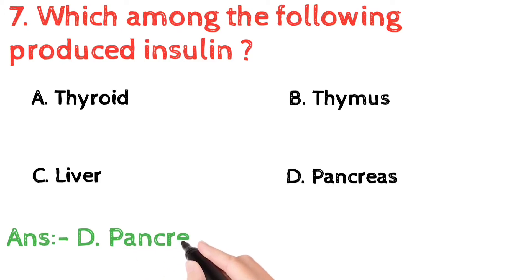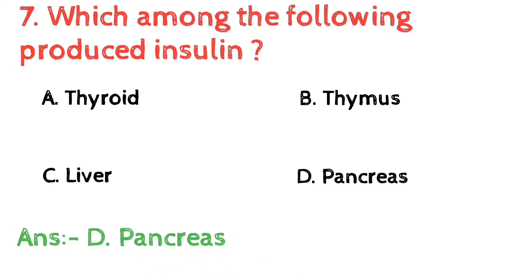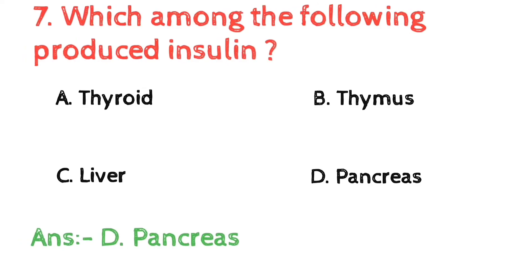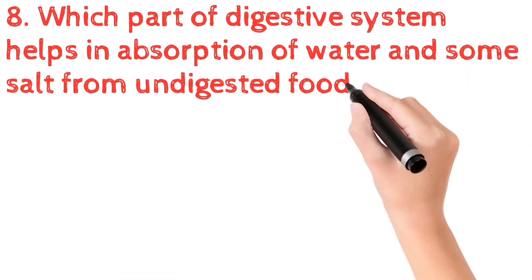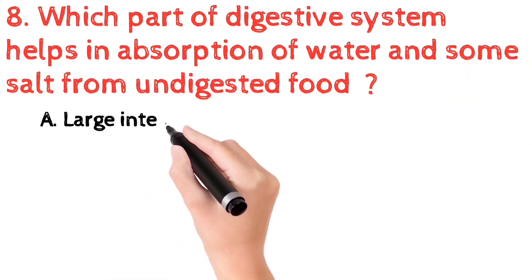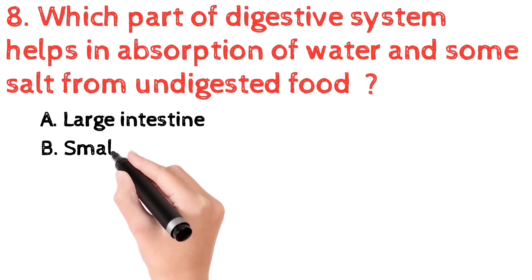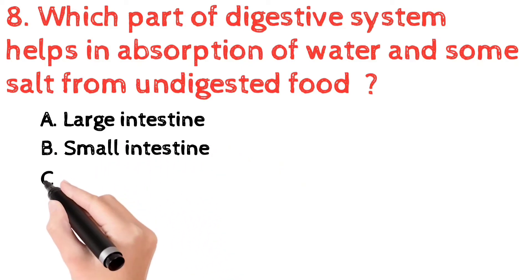The correct answer is d) pancreas. The pancreas produces insulin. It is a peptide hormone produced by the beta cells of the pancreatic islets. The pancreas performs both an endocrine and exocrine function; as an endocrine gland it helps regulate blood sugar levels and aids the secretion of hormones such as insulin and glucagon.